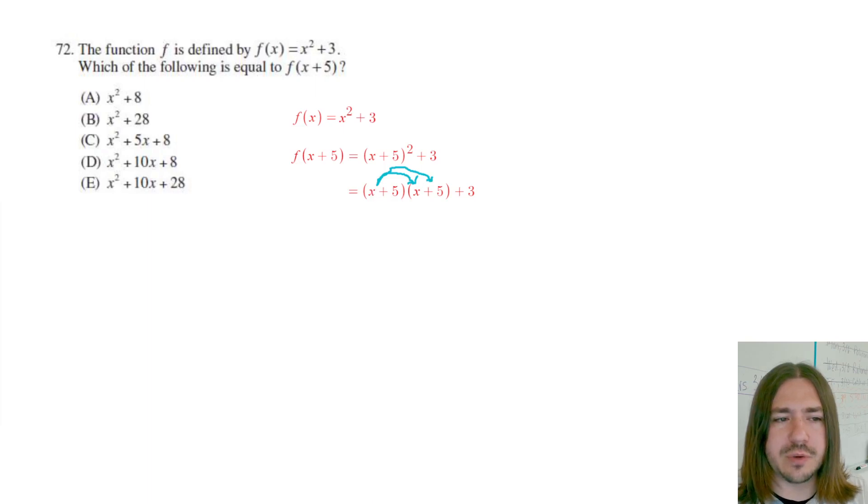I've got to distribute the x to both terms in the second binomial. So x times x is x², and x times 5 is 5x. Then I distribute the 5 to both terms in the second binomial. 5 times x gives me another 5x, and 5 times 5 is 25.